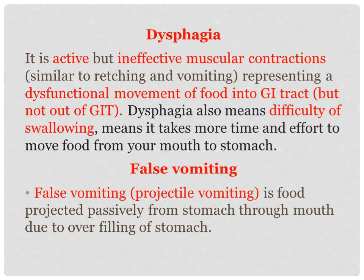Another condition is false vomiting, also called projectile vomiting. Food is projected passively from the stomach through the mouth due to overfilling. If the animal has taken too much food, there is dilatation of the stomach. The stomach has a capacity to dilate, but when the threshold is exceeded, there is contraction of muscle and passively food comes out through the mouth, or by gravitation. Excessive accumulation of food, gas, or any material in the stomach leads to projectile vomiting. Here the symptoms of true vomiting are lacking — that is why it is called false vomiting.